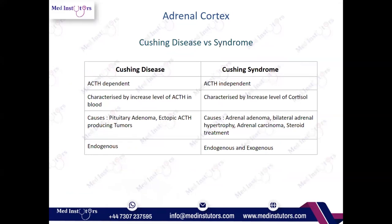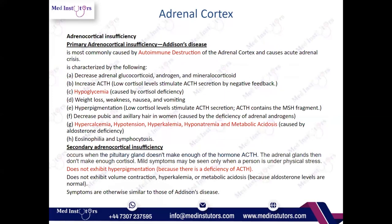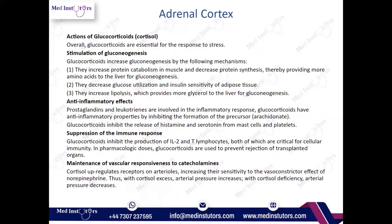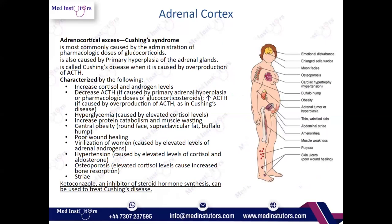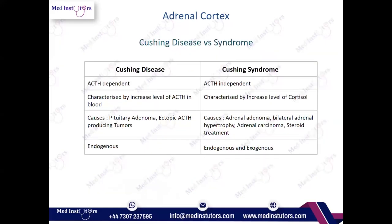Now let's compare Cushing's disease and Cushing's syndrome. Cushing's disease is ACTH-dependent, characterized by increased ACTH in the blood, and is mainly caused by pituitary adenoma. In pituitary adenoma, the tumor produces more and more ACTH — hence it is called ACTH-dependent. It is always endogenous. Cushing's syndrome, on the other hand, does not depend on ACTH.